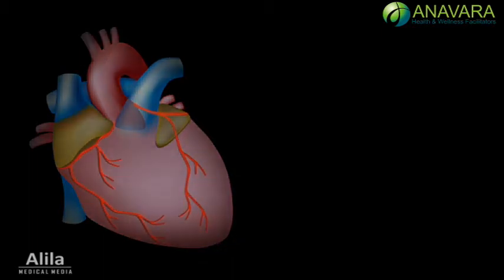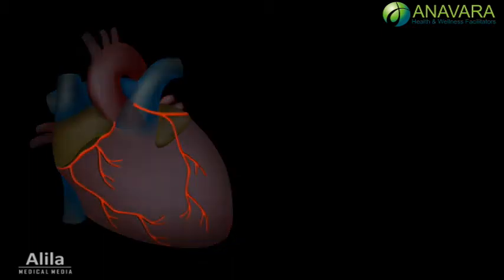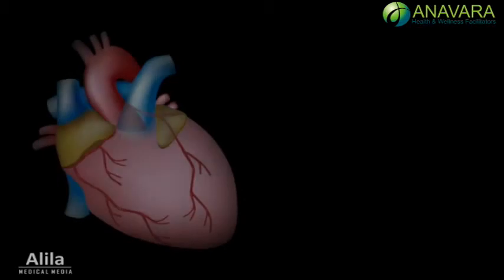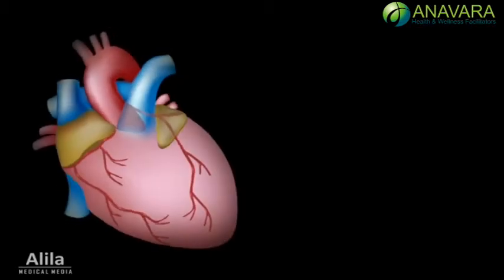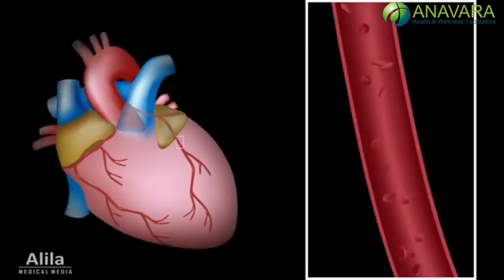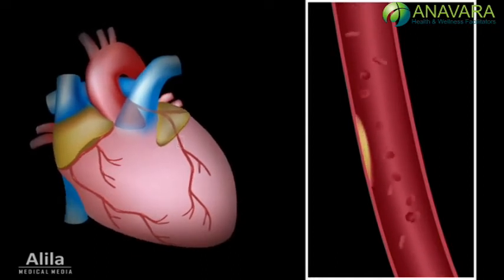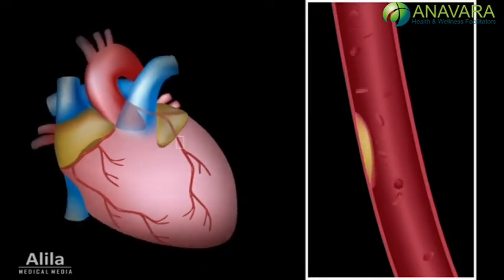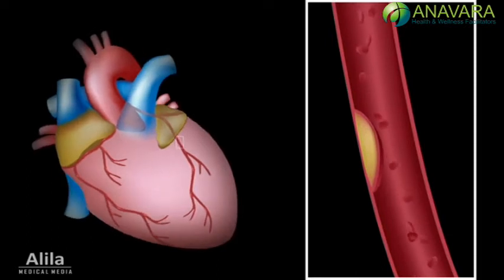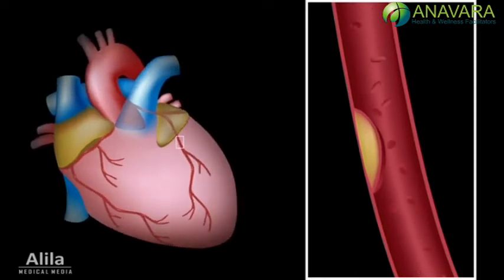This occurs when one of the coronary arteries, the arteries that supply blood to the heart, is blocked. The blockage is commonly due to atherosclerosis, the accumulation of cholesterol plaques, or fat deposits, on the wall of blood vessels. As the plaque builds up, the vessel becomes narrow, restricting blood flow.